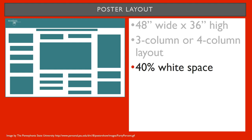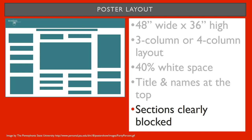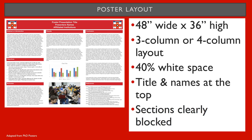40% may sound like quite a bit of space, however posters are an overview and not detailed documents. The title and presenter names are typically at the top of the poster, and you also want to make sure your sections are clearly blocked. Here is a basic example of a 3-column layout using section headings and white space to create distinction between the different sections.